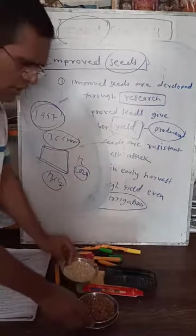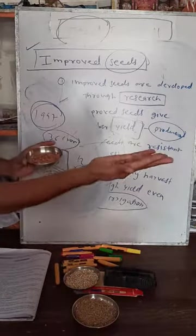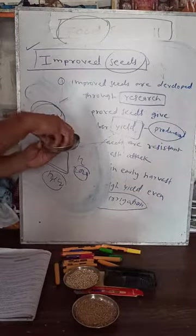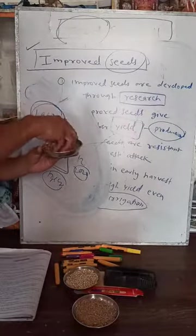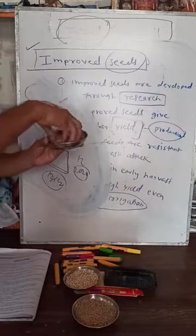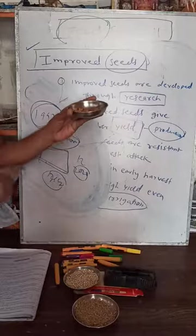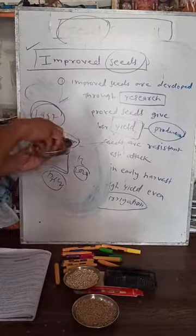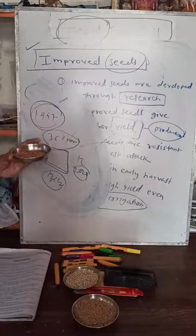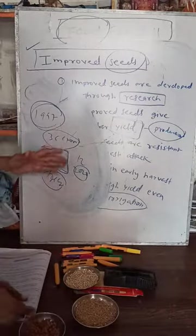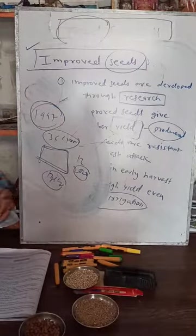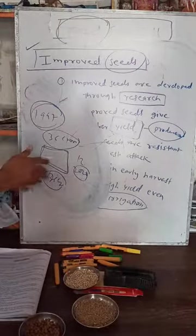Seeds are grains, pulses, cereals — those are the seeds. Here I am showing you what seeds look like — this is jowar, these are the quality seeds. Before putting seeds in the soil, we should check whether the seeds are damaged or not. In the laboratory, seeds are checked and certain chemicals or pesticides are applied to make them healthy, so we get more crops and more yield.